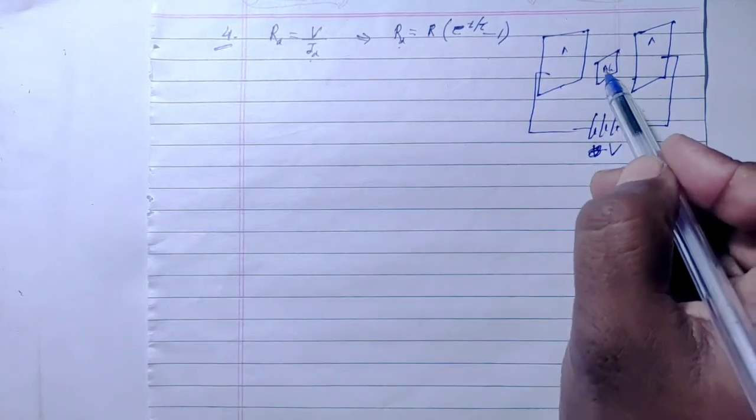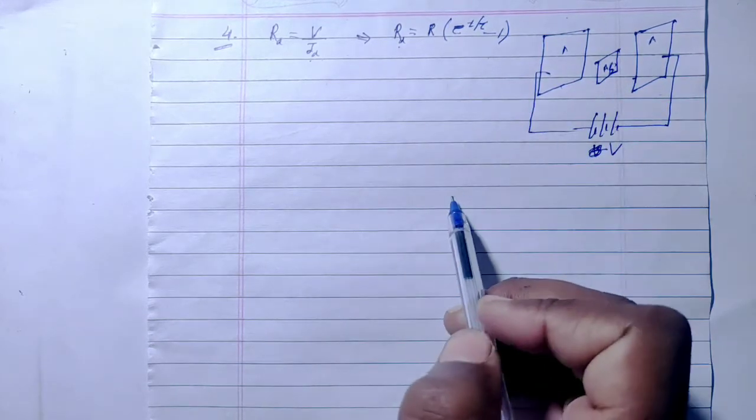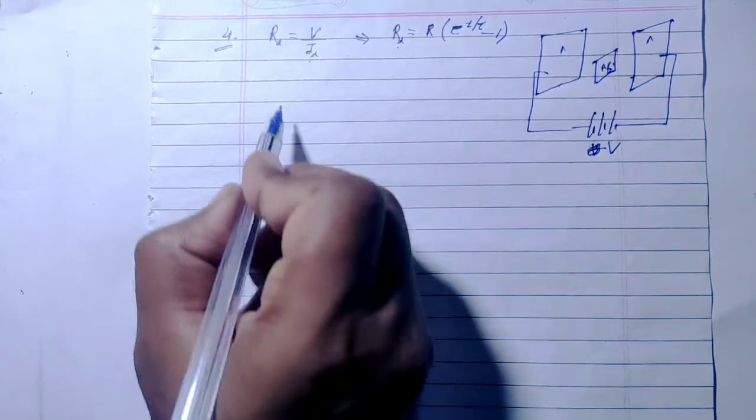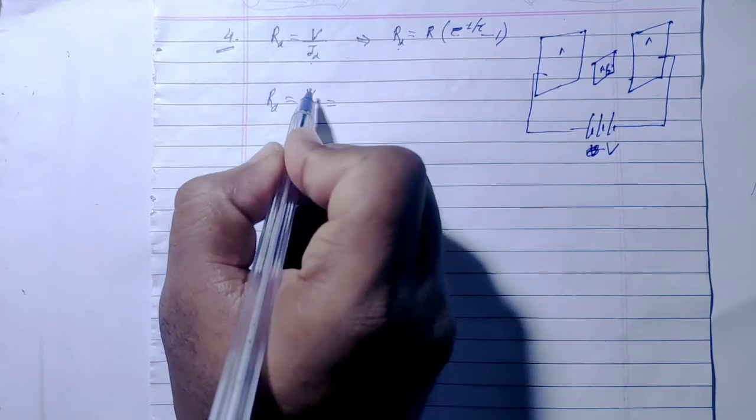Let's solve the problem. Given R_d = V/i_d, the total potential difference is V = EMF - iR, where R is the total resistance and i is the current flow.